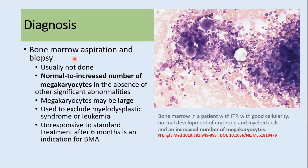Bone marrow aspiration and biopsy may be needed in selected cases; it is not done routinely. When performed, findings typically show increased megakaryocytes in the absence of other significant abnormalities, and megakaryocytes may be large. It is used to exclude diseases like myelodysplastic syndrome or leukemia, and is usually done in older patients or those unresponsive to standard treatment after six months. A bone marrow in ITP shows good cellularity, normal erythroid and myeloid development, and increased megakaryocytes.